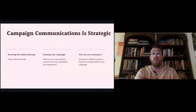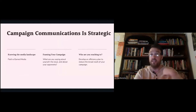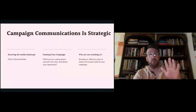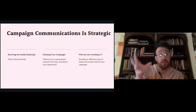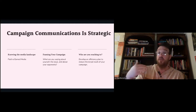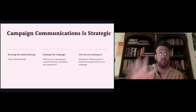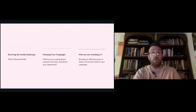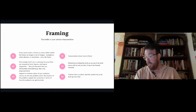There are three things we need to know. First, the media landscape — I'll talk about paid and earned media. Second, and where I'll spend the most time, is framing the campaign: what are you saying about yourself, the issues, and the opponents? Third, who are we reaching out to and what's the efficiency plan to reduce the overly broad reach? These are the three core components.